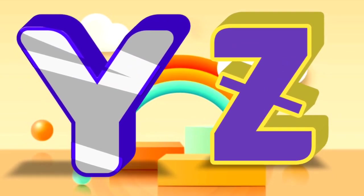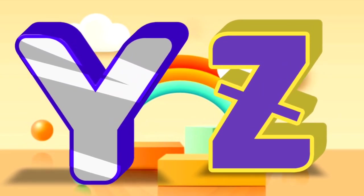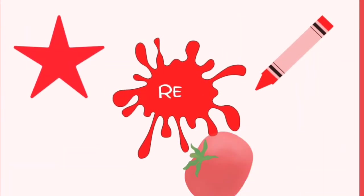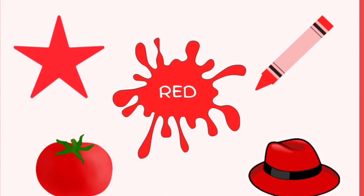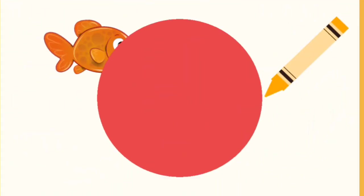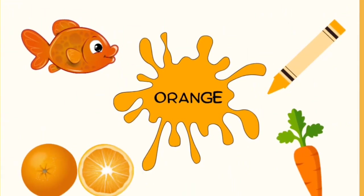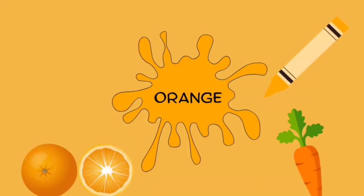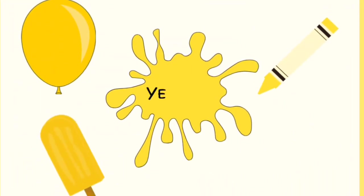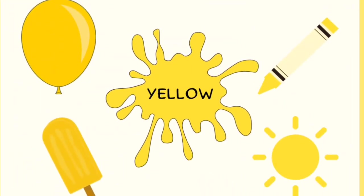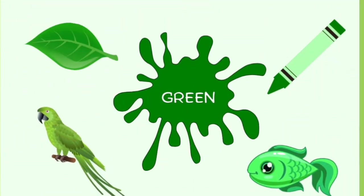A is for apple, a-a-apple. B is for ball, b-b-ball. Z is for cat, k-k-cat. D is for doll, d-d-doll.